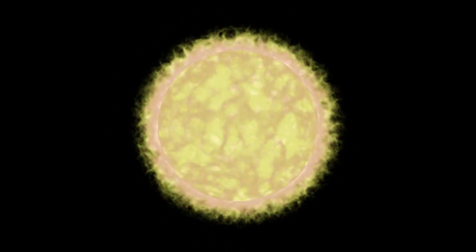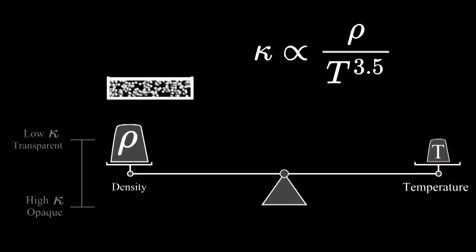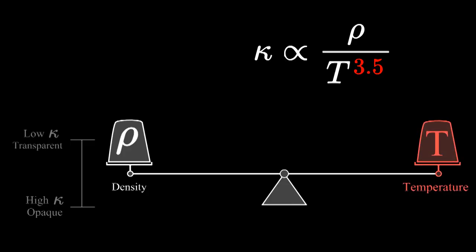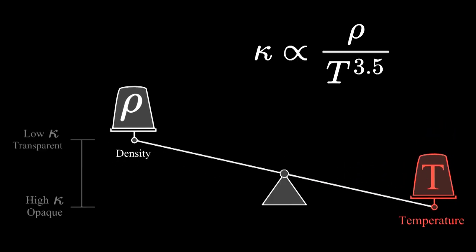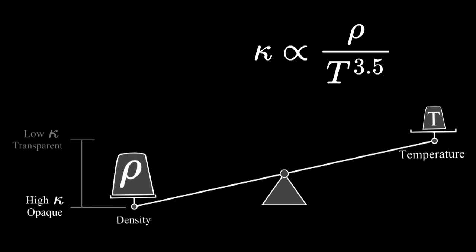The opacity depends on two quantities that fight against each other: density and temperature. The opacity, kappa, is proportional to the density divided by temperature to the three and a half power. When gas is compressed, the density goes up, but normally the temperature goes up, and opacity is so sensitive to temperature that this increase in temperature will overpower the increase in density. Compressing the gas normally lowers the opacity, but sometimes the temperature doesn't increase, and the opposite happens. Opacity goes up.